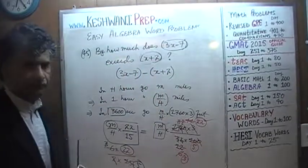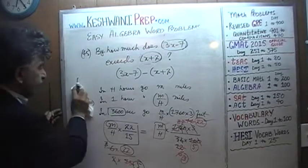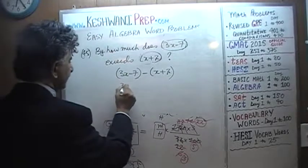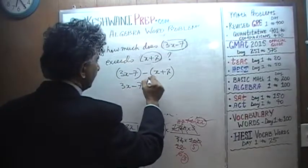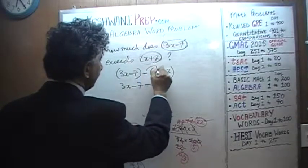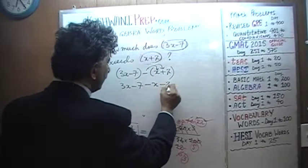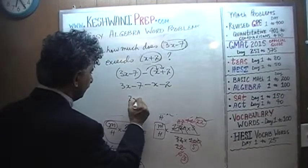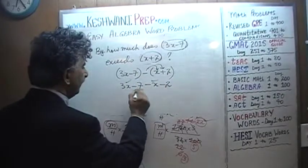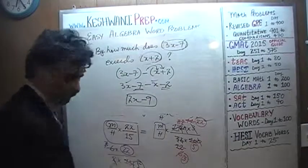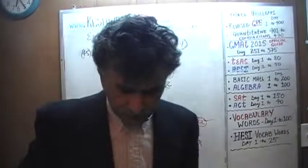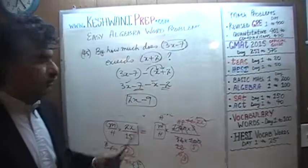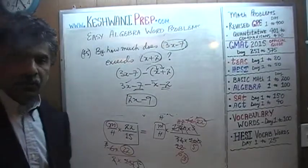The answer is 3x minus 7 minus (x plus 2). When we open the parentheses we get 3x minus 7 minus x minus 2. Then 3x minus x gives us 2x, and negative 7 minus 2 gives us negative 9. So 3x minus 7 exceeds x plus 2 by 2x minus 9.